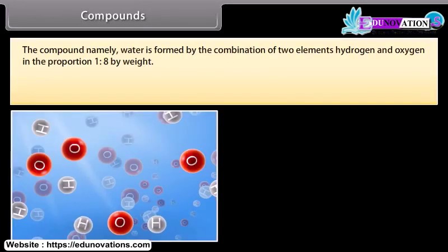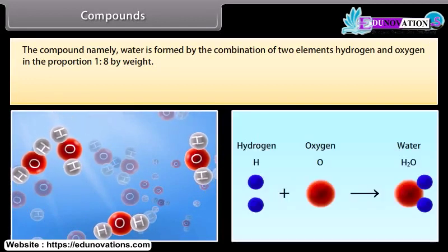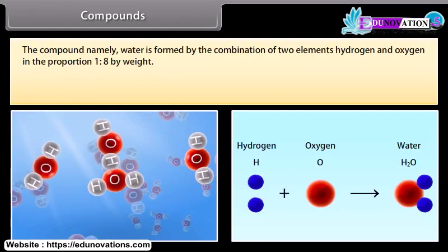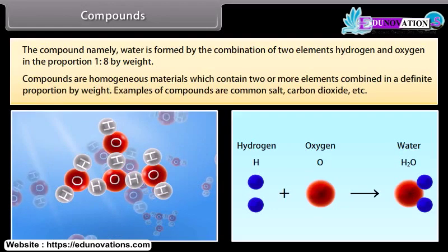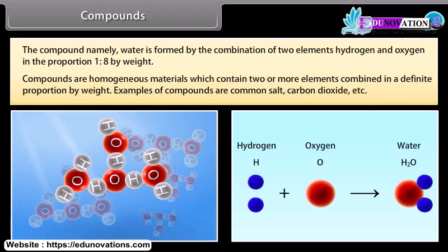The compound water is formed by the combination of two elements, hydrogen and oxygen, in the proportion 1:8 by weight. Compounds are homogeneous materials which contain two or more elements combined in a definite proportion by weight. Examples of compounds are common salt, carbon dioxide, etc.